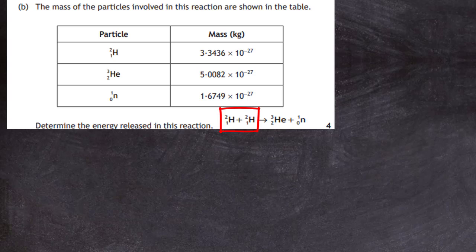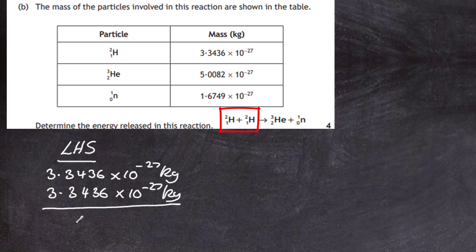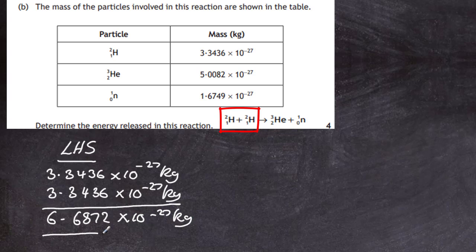If there is a difference in mass, this is what we call the mass defect, and from the mass defect we can convert that into energy according to Einstein's famous equation E equals mc squared. So on the left hand side we have 2H1 plus 2H1, which gives us two lots of 2H1: 3.3436 times 10 to the minus 27 kilograms, plus another identical 3.3436 times 10 to the minus 27 kilograms. Adding those up carefully gives us 6.6872 times 10 to the minus 27 kilograms.